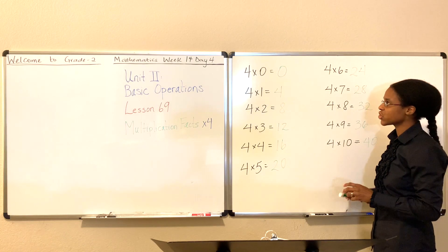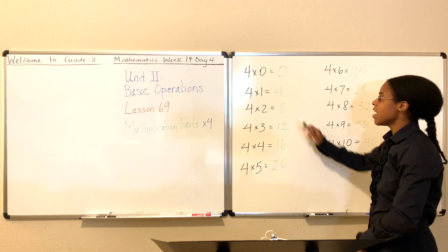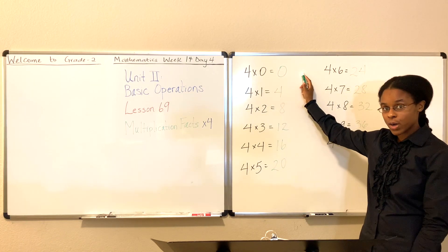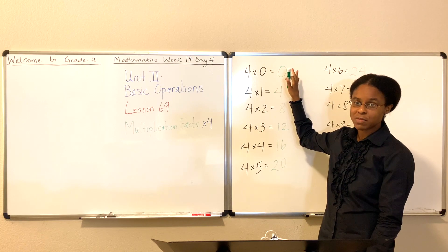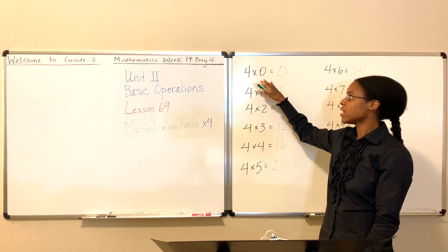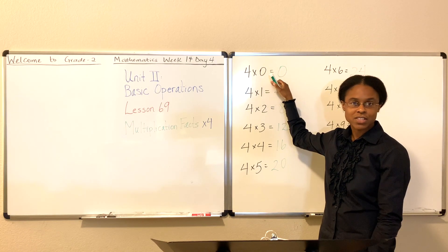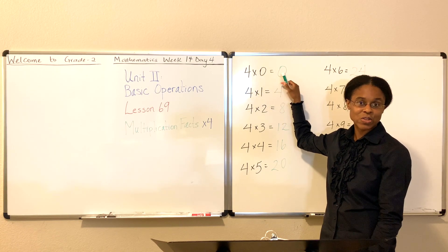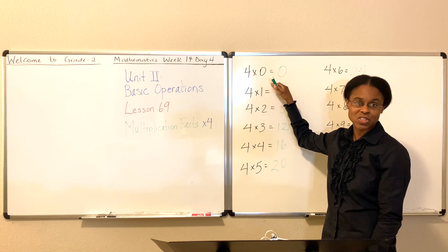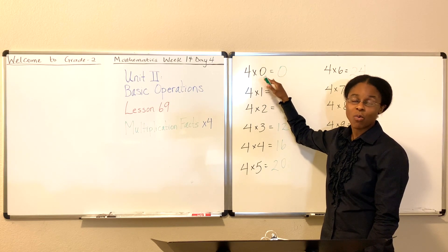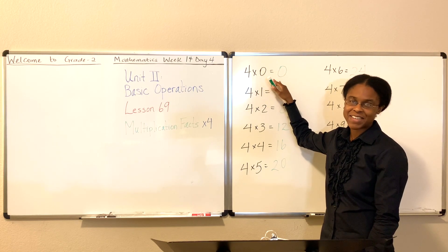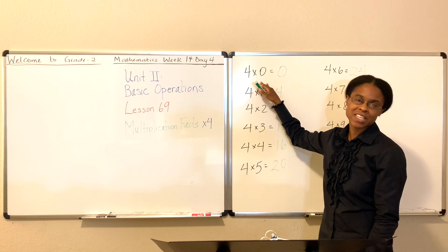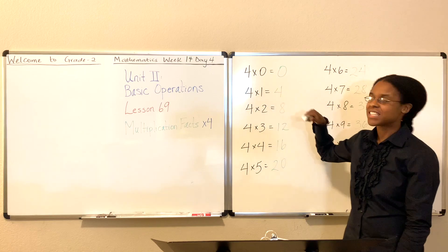If you got that, let's try one more time. Four times zero is zero — anything times zero is always going to be zero. One times zero is zero. Five times zero is zero. Twenty times zero is zero. One million times zero is zero. Four times zero is zero.